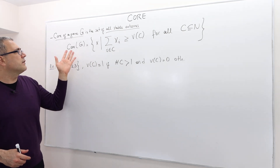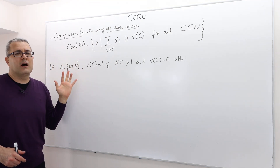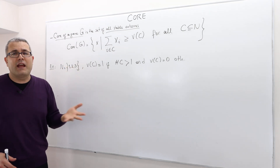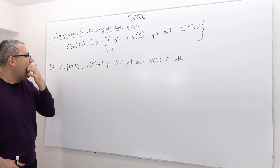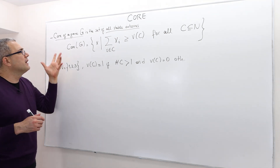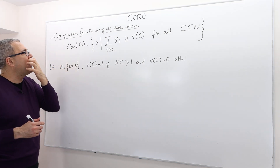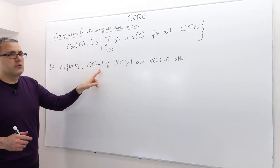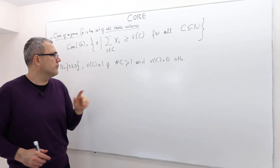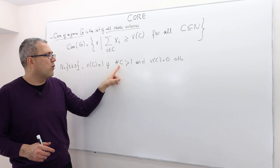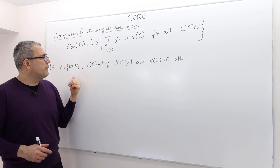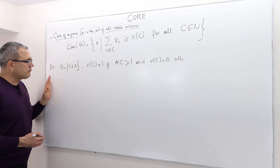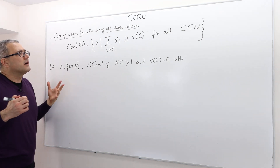The question is: for games, can we say there always exists a stable outcome? Can the set of core allocations ever be empty? Yes, it can be empty. Here is an example that also shows how we calculate the set of core allocations. There are three players — one, two, three. The worth of a coalition equals one if the number of players in the coalition is greater than one (i.e., two or three players), and zero if there is only one player or no player.